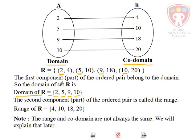The second component, that means the second numbers, 4, 10, 18, and 20. The second component of the ordered pair is called the range. Range. So the range of R are the second numbers, 4, 10, 18, and 20.